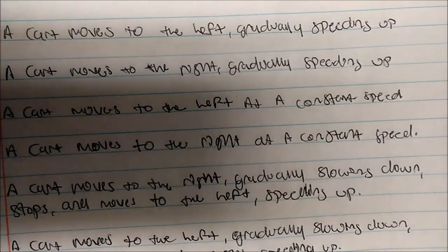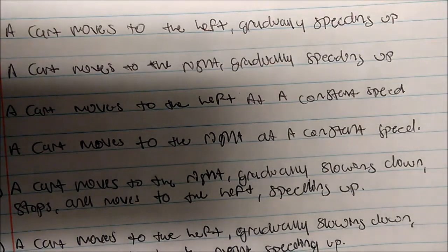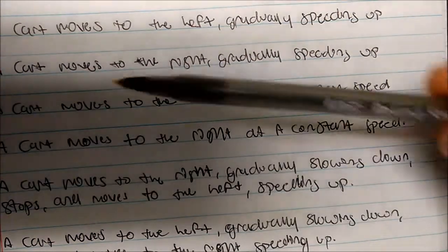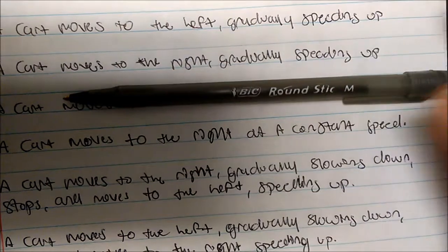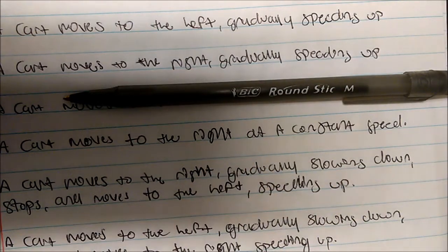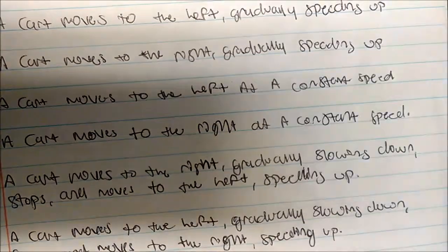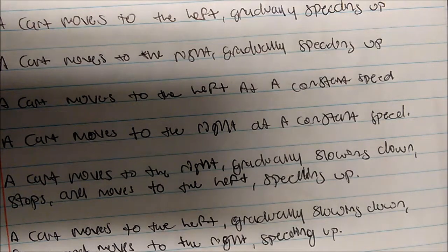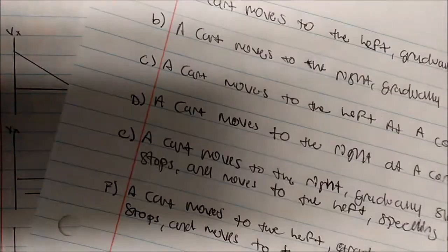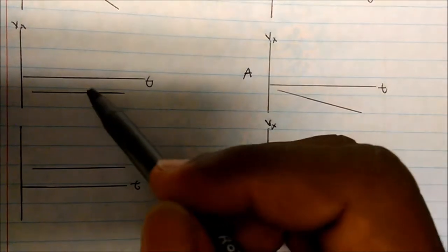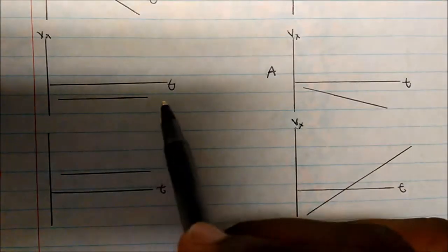C says a cart moves to the left at a constant speed. Constant means some sort of line with no slope — just a constant flat line. The only thing we need to look at is whether the constant line is in the negative x or positive x direction. Looking at this one, the line is constant and it's in the negative x, so it's moving to the left. Therefore, this must be C.